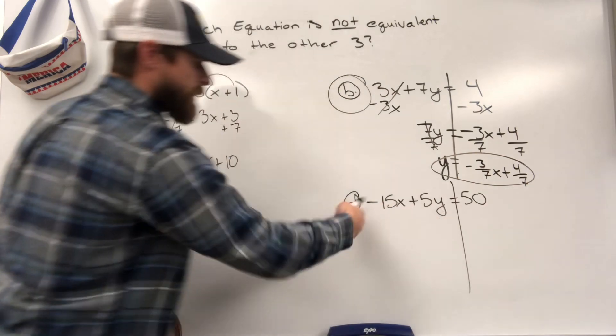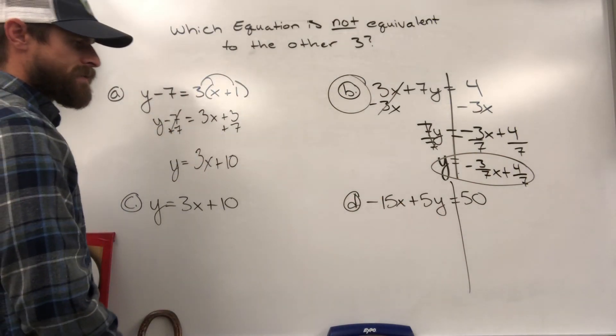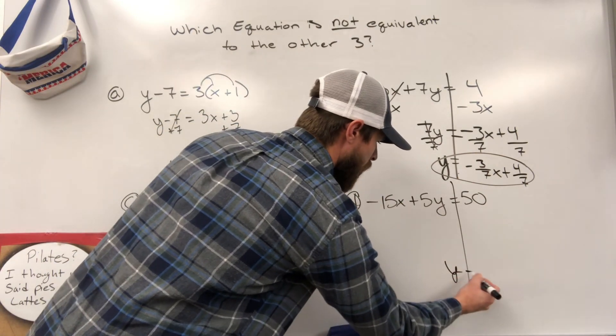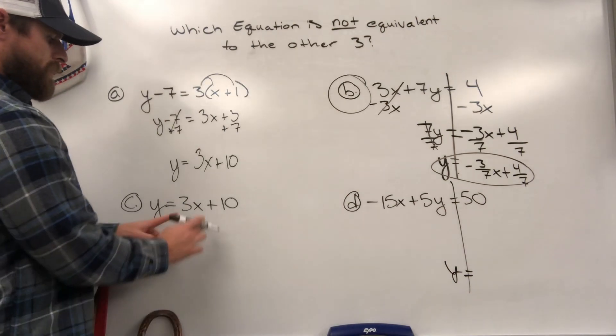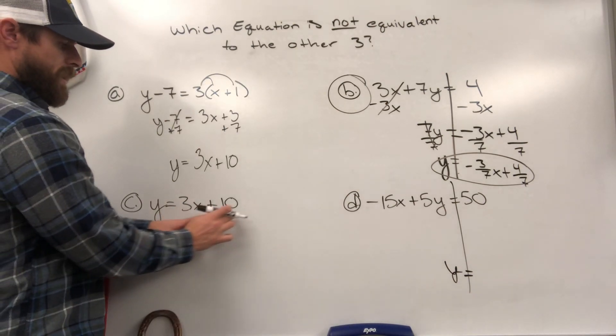Okay, same thing. It's in standard form. x and y terms are on the left side. Let's isolate y so that we can put it in slope intercept form, and hopefully this one comes out to 3x plus 10.